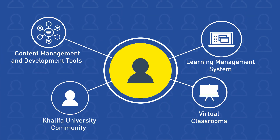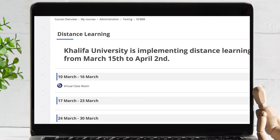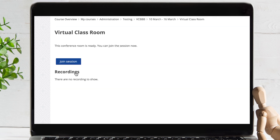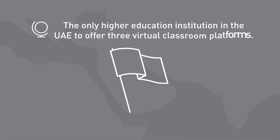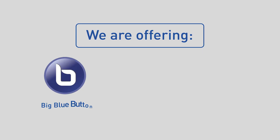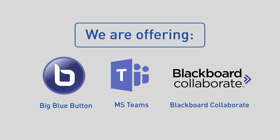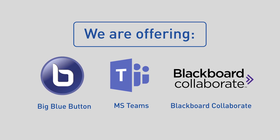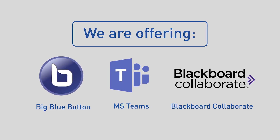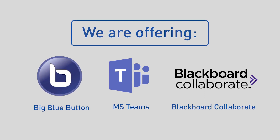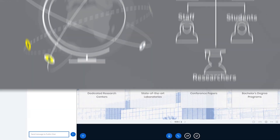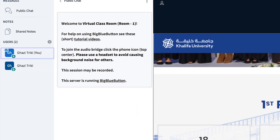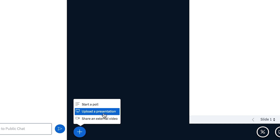The third layer is the virtual classrooms. Because we recognise our faculty have different needs and preferences according to their unique required learning outcomes, we are the only higher education institute in the UAE to offer three virtual classroom platforms: Big Blue Button, MS Teams and Blackboard Collaborate. We like to give our faculty and students options, and we also like being prepared — in case any issue occurs with one platform, another will be available. These virtual classrooms allow faculty to deliver lectures live, facilitate lively group discussions, and give students a place to collaborate on group assignments and projects.